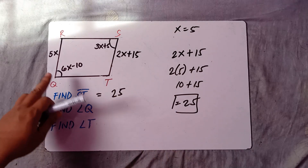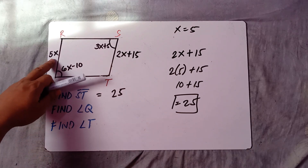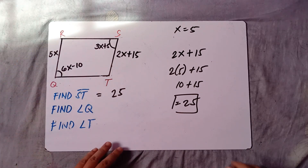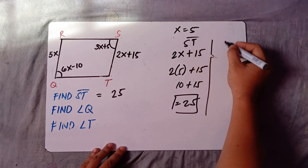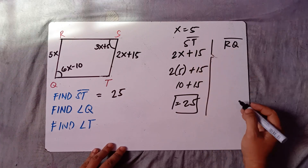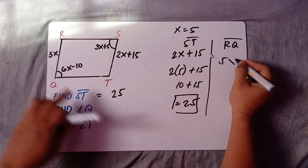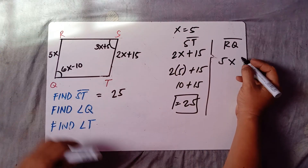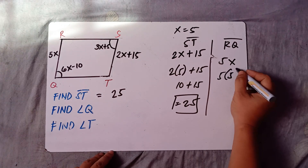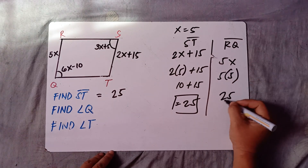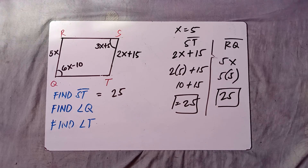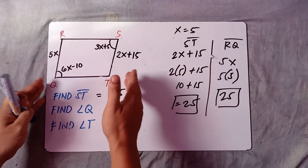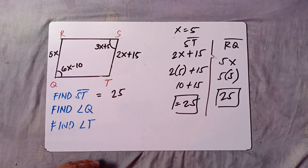Let's check RQ: 5 times 5 is 25 — the same answer. That's because according to the properties of parallelogram, opposite sides are congruent.